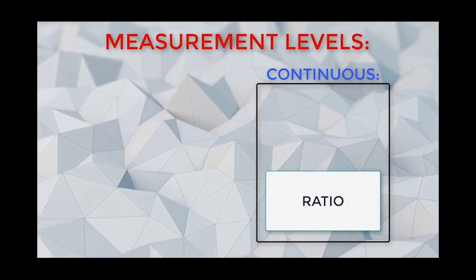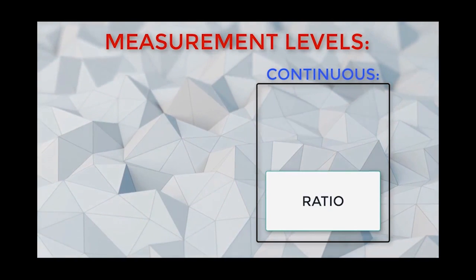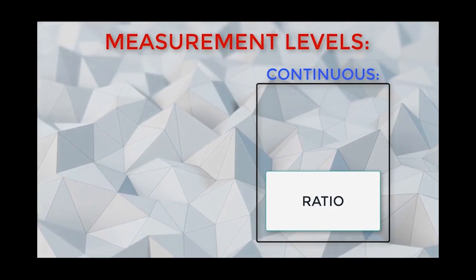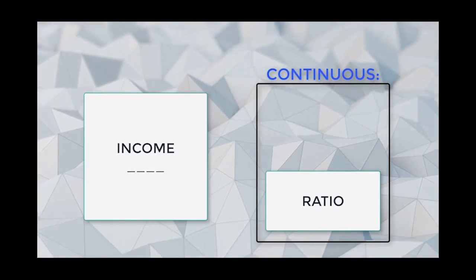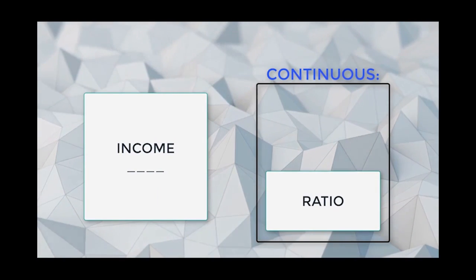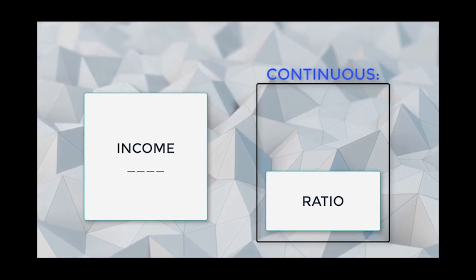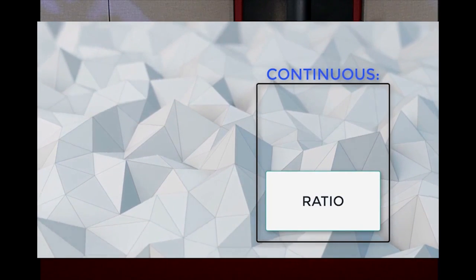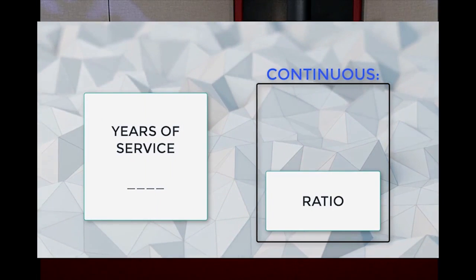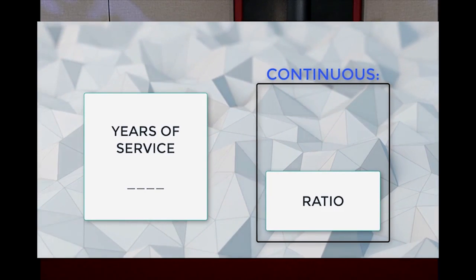Our last level of measurement is ratio. Ratio-level data are in logical order with equal intervals and also an absolute zero. For example, income is ratio because it involves numbers with equal distances but also has an absolute zero — zero income is an available choice. Similarly, years of service is ratio because zero years of service is a possible choice. Both examples have equal intervals and the presence of an absolute zero.